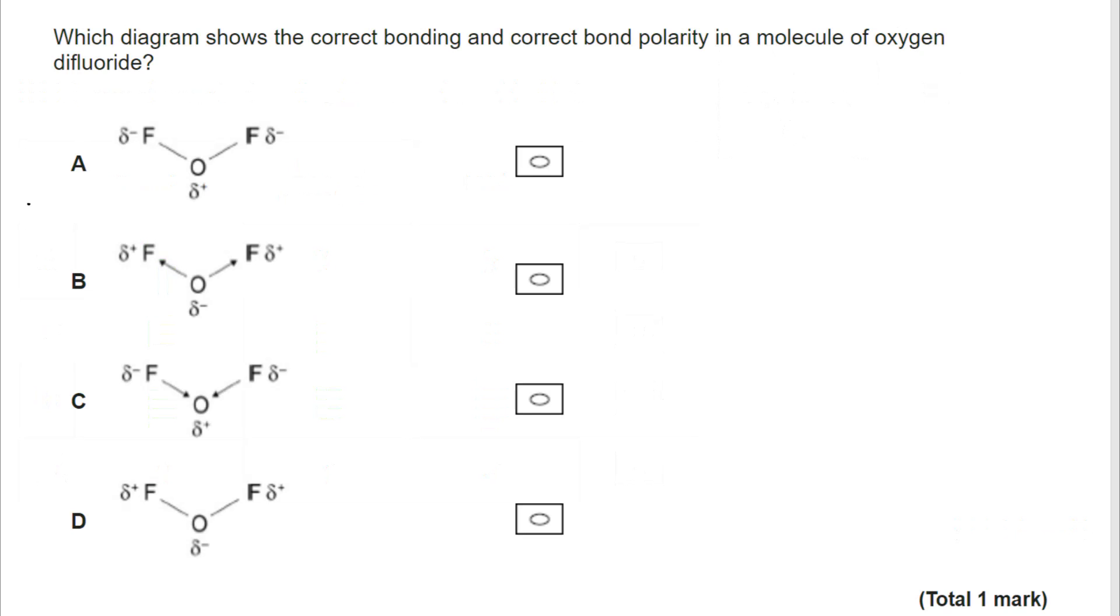Okay, so on this we're looking for the correct bonding and correct bond polarity in a molecule of oxygen difluoride OF2. Not necessarily something that you're familiar with, but you can certainly apply your knowledge from the work you've done on bonding. So first of all we can go through and identify where the bond polarities are correct. We know that fluorine is the most electronegative element, so we know it's more electronegative than oxygen and for that reason we know that the Fs are delta negative and the oxygen is therefore delta plus.